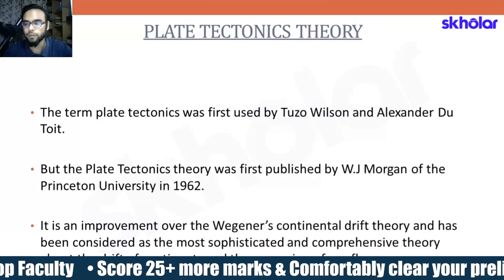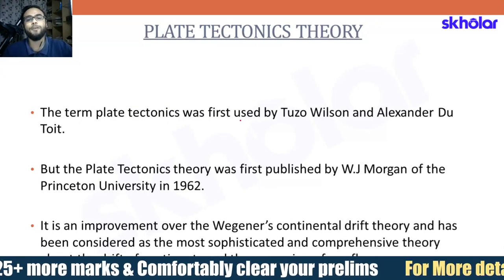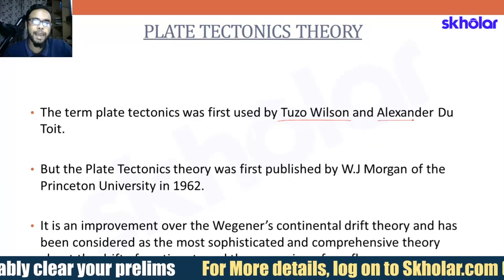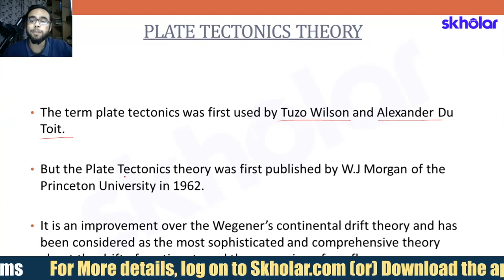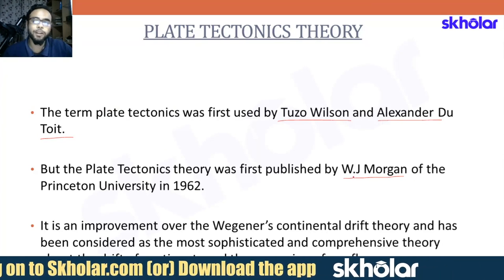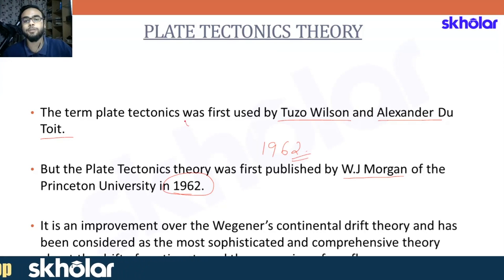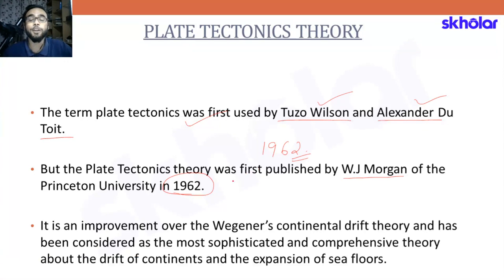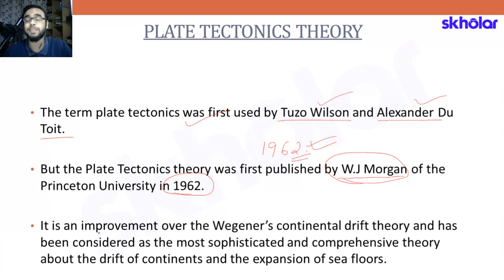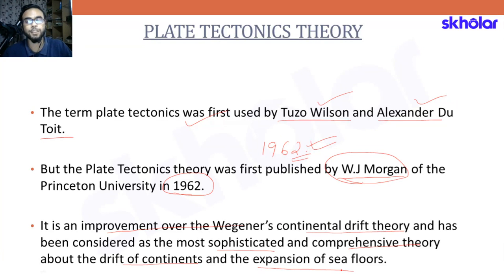The term 'plate tectonics' was first used by Tuzo Wilson and Alexander Du Toit. However, the plate tectonic theory was first published by W.J. Morgan of Princeton University in 1962. This theory is considered to be an improvement over Wagner's continental drift theory and has been considered the most sophisticated and comprehensive theory about the drift of continents and expansion of sea floors.